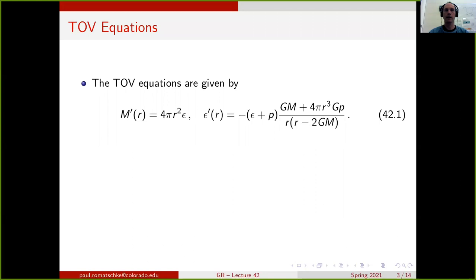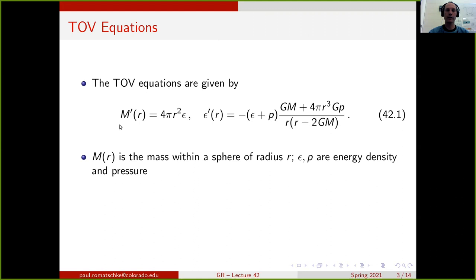Jumping right in, those are the equations governing the structure of stars in general relativity, listed here in equation 42.1. They are the TOV equations that we derived in the last lecture. As a reminder, m(r) here — this function derived from the first equation — is the mass within the sphere of radius r for a spherically symmetric star.